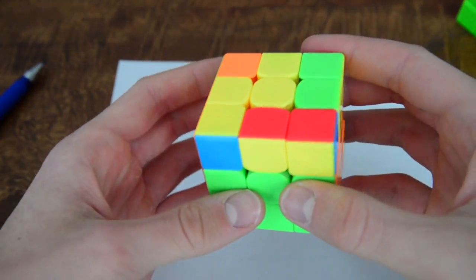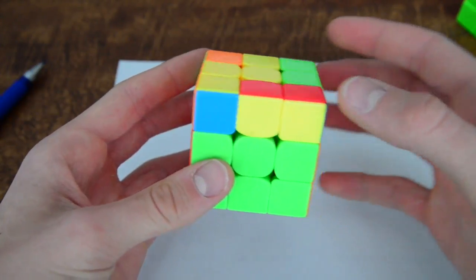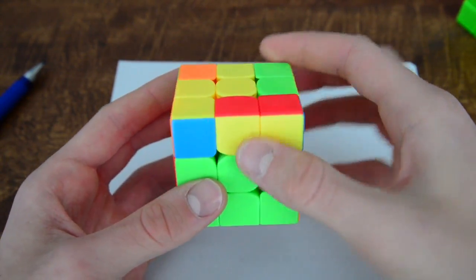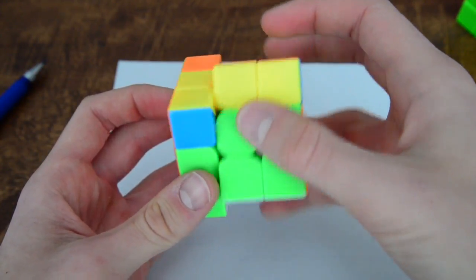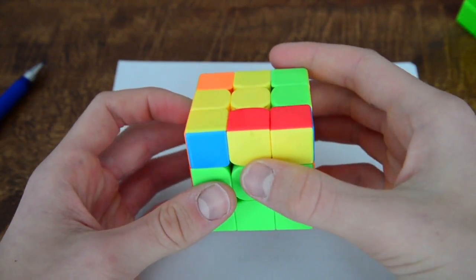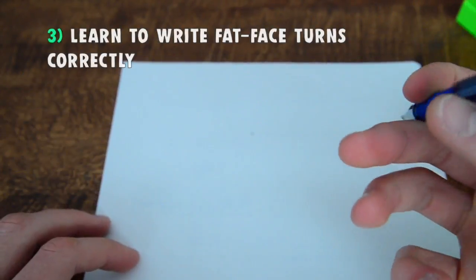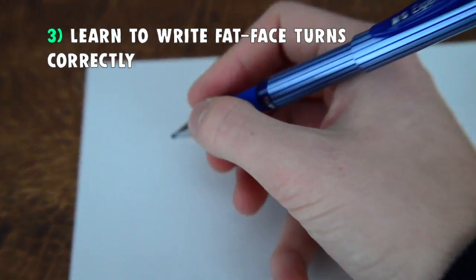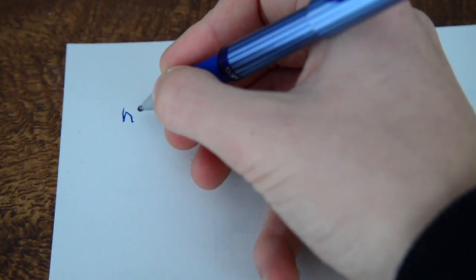Alright, so third most important tip is how to do the double face turns. Because this is the reason why many, including myself, have gotten DNFs because in a lot of oils you need to do fat turns. According to the recent regulations in the WCA you need to write lowercase n in front of the turn.